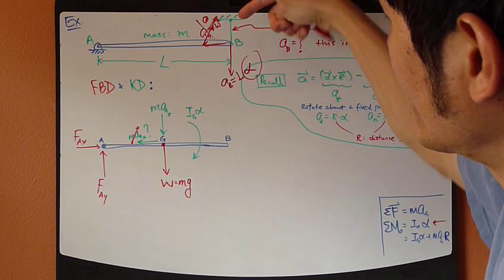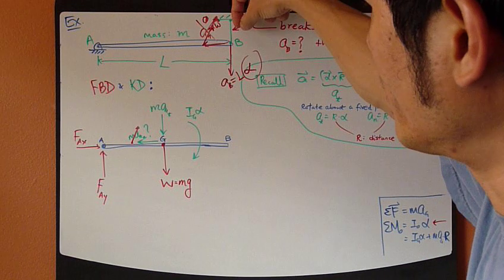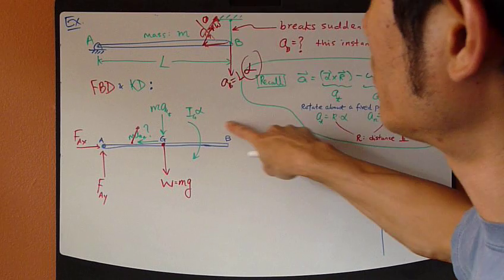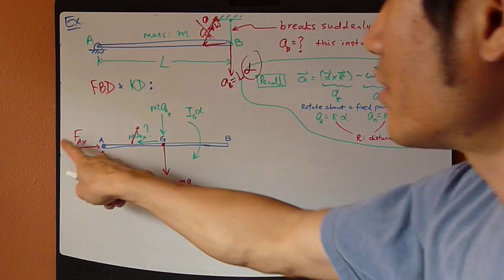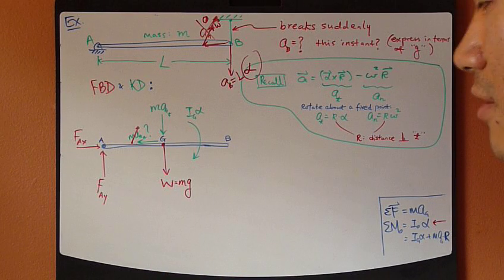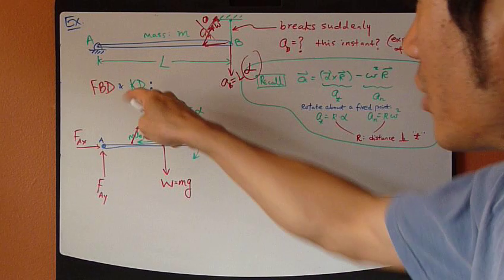Now, in this instance, after the string breaks, there's no more tension holding it. So, there's nothing here. So, that's it. Three vectors of forces. That's all. Move on to kinetic diagram.